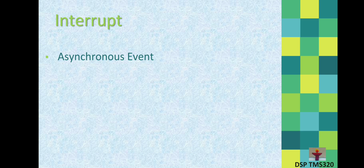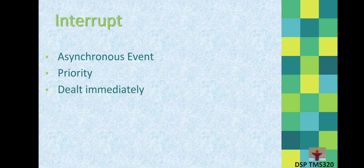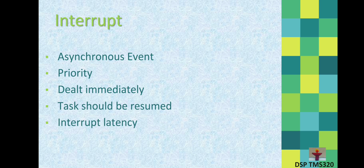With this analogy we can extract some basic definitions for interrupts. Interrupts are asynchronous events because they appear suddenly. They may be more or less important, so they have priority. They must be dealt with immediately — like answering before the phone stops ringing. The laboratory preparation should be continued after the call, just as the interrupt task should be resumed. The time spent to handle the interrupt should be as small as possible — this is called interrupt latency. After the call you continue from the exact place where you left off, which is known as context save or context restore.